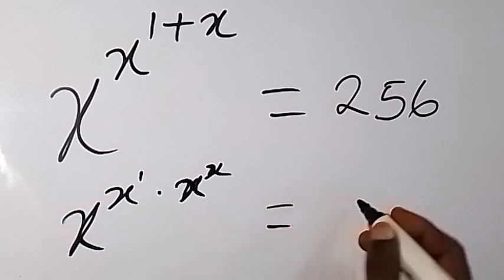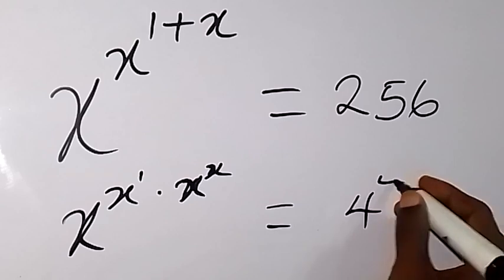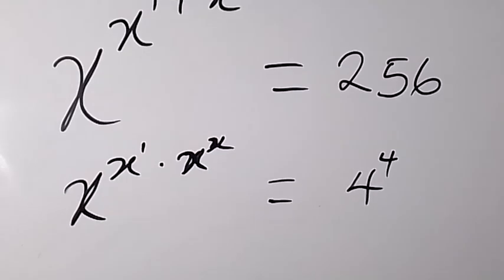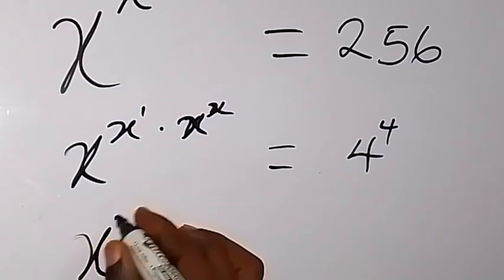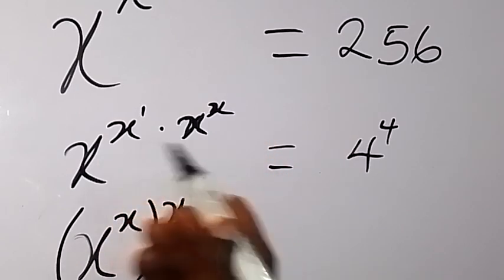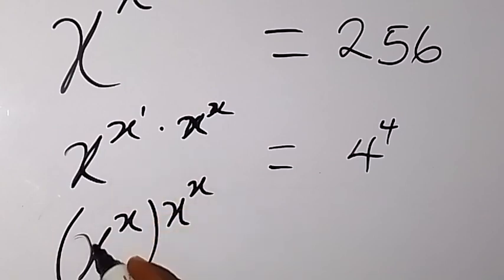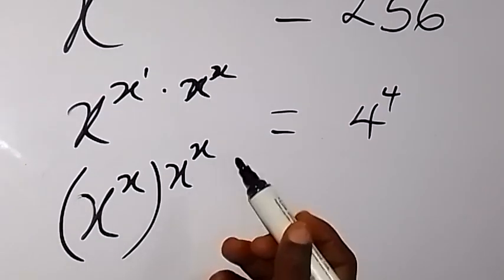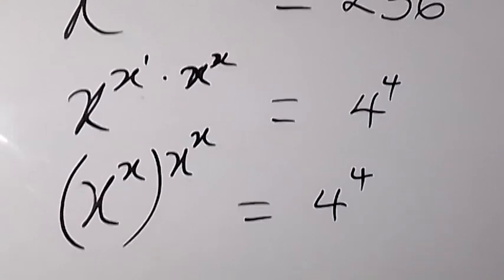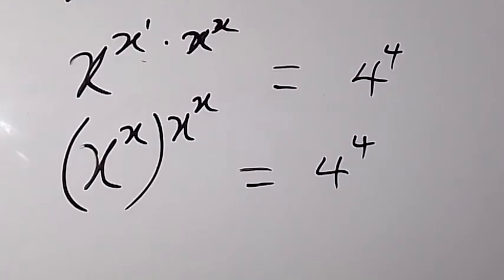That equals to 4 raised to power 4 on the other side. Now 4 raised to power 4 is the same as 256. From here, we cannot write this as x raised to power x, all raised to power x, then raised to power x. Since these two powers multiply, we can separate one of them inside and one outside. When we do that, we see this comes back equal to 4 raised to power 4, and something interesting appears — we have the same number.